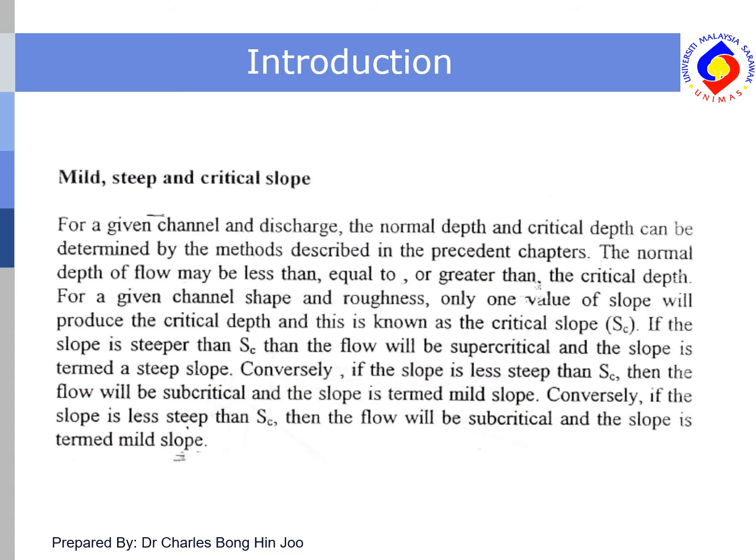For a given channel shape and roughness, only one value of slope will produce the critical depth, and this is known as the critical slope. If the slope is steeper than the critical slope, the flow will be supercritical and the slope is termed a steep slope. Conversely, if the slope is less steep than the critical slope, the flow will be subcritical and the slope is termed a mild slope.